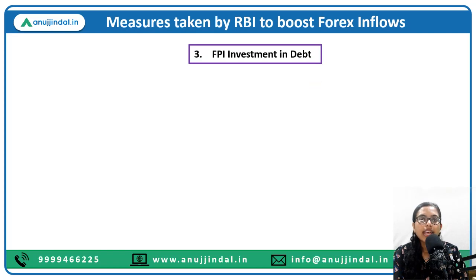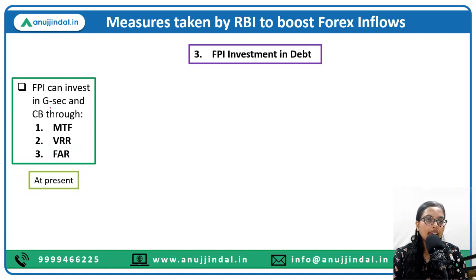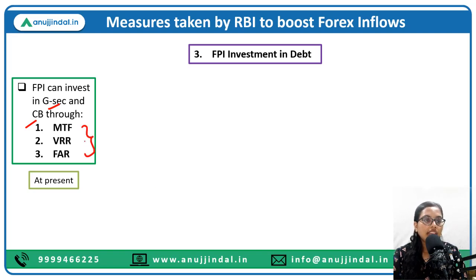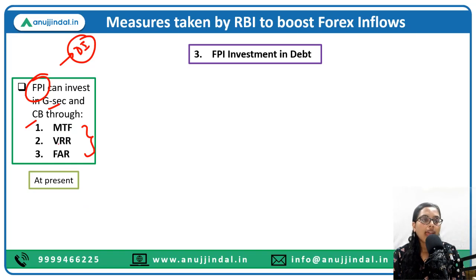Moving to the third measure: investment in debt by Foreign Portfolio Investors (FPIs). FPIs usually invest in stocks and equities, but to encourage their investment in government securities and corporate bonds, RBI in consultation with SEBI has provided three channels through which an FPI or non-resident can invest in government securities and corporate bonds — debt instruments. These three channels are: MTF (Medium Term Framework), the Voluntary Retention Route (VRR), and the Fully Accessible Route (FAR).